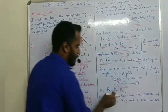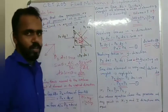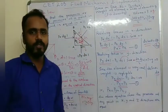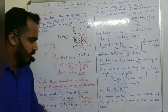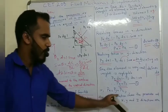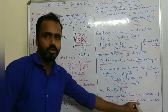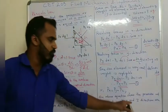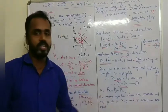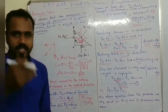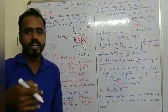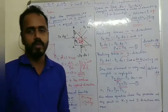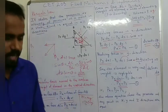From the two equations, px equals py equals pz. This means the pressure at any point in the x, y, and z directions are equal, which proves Pascal's law.